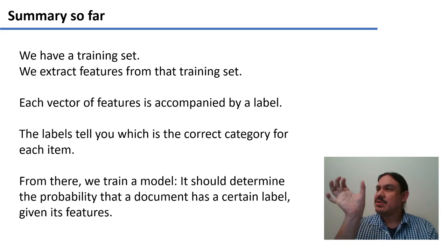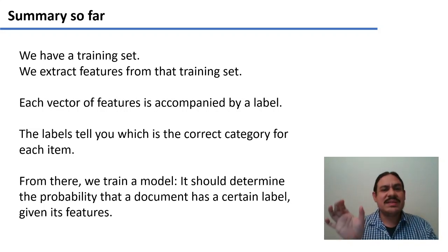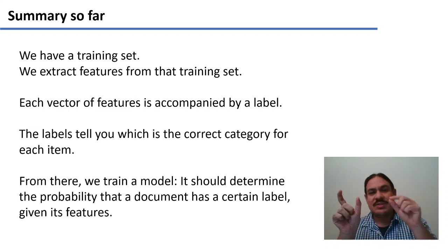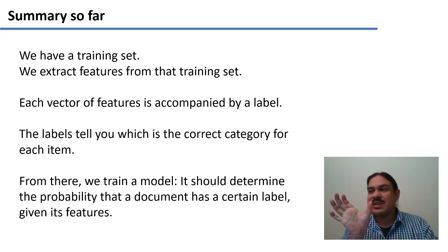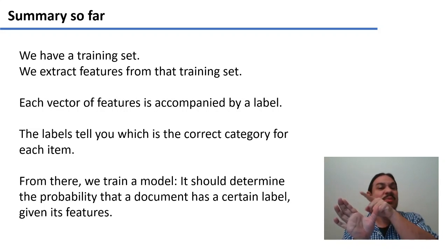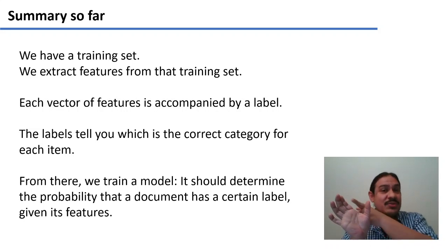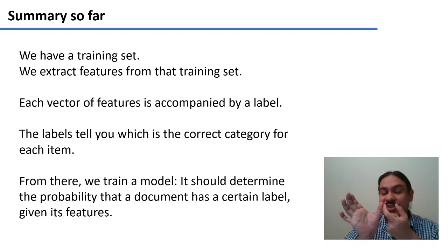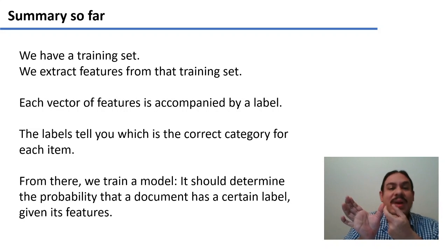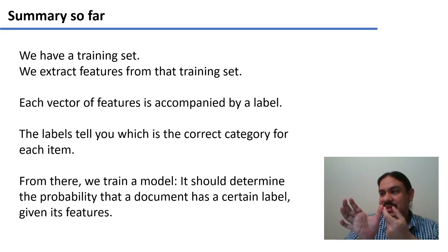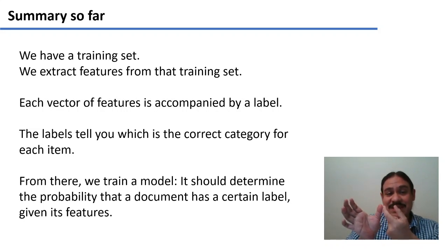So what have we been doing so far? We have training sets — say documents for example — and we extract features from that training set. For example, whether they contain the word 'greatest', whether they contain the word 'disappointing', whether they have an end with a curl on top, and we get a vector of features. Next to that vector of features, we have a label that comes in with the training data. This label tells you what the correct label or classification should be. For example, if something has the word 'greatest' and does not have the word 'disappointing', it is probably going to be a positive movie review.